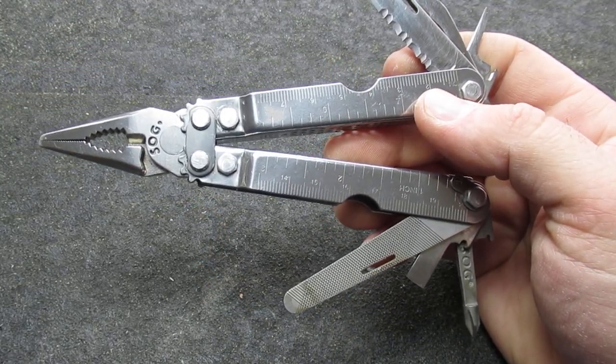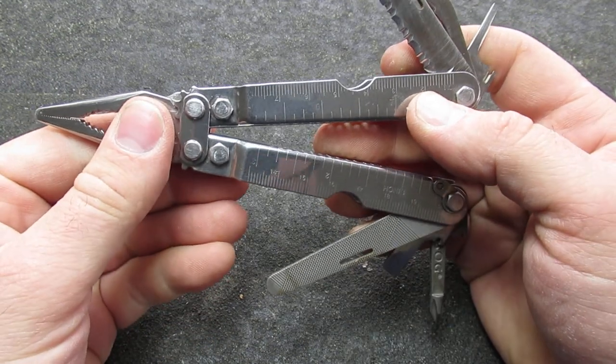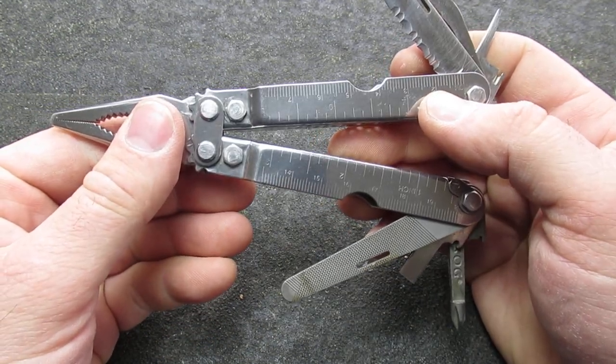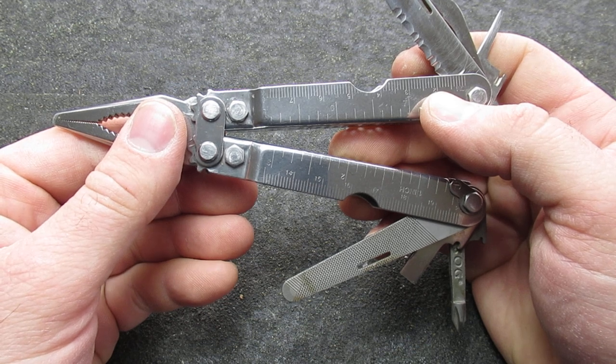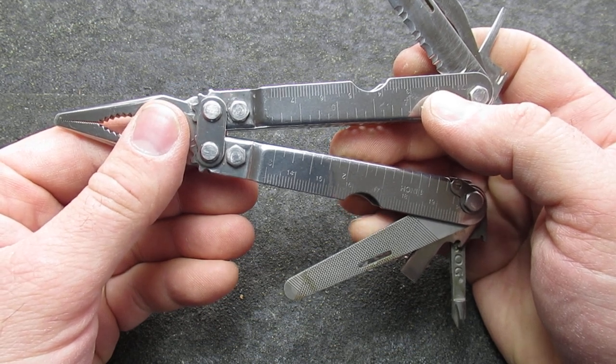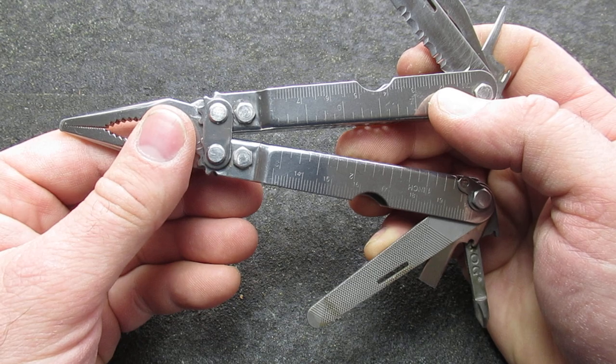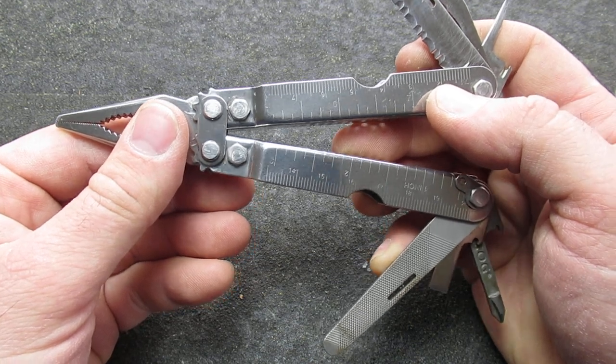On the deluxe you're supposed to get the partially serrated blade, small and large screwdrivers, Phillips screwdriver, quarter-inch socket drive, medium screwdriver, three-sided file, can opener, bottle opener, awl, rulers, and lanyard.